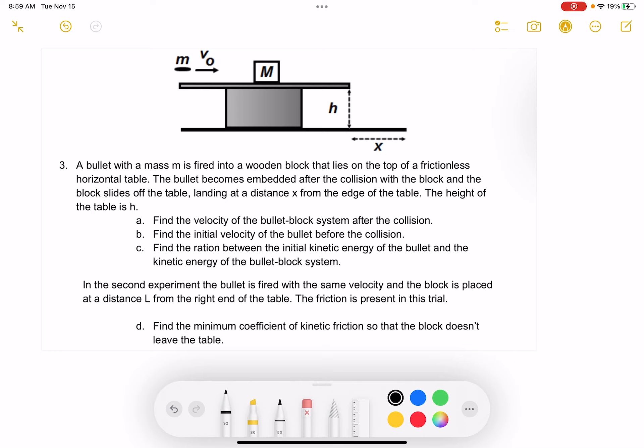Find the velocity of the bullet-block system after the collision. So once again, this is similar to that past question we were looking at before where it feels like it should be a momentum question, but it's actually not. You'll notice part b is find the velocity of the bullet before the collision. The only way we can find the velocity after the collision is if we know the velocity before the collision. So this tells us it's not a momentum question. It's actually going to be a different kind of question.